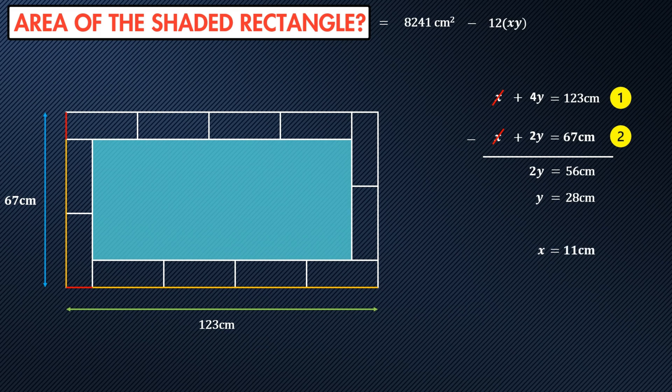So now we have values for x and for y. We can plug that into our equation. The area of the outer border is 12 times x times y, which is 12 times 11 times 28. That equals 12 times 308, which is 3,696. And the area of the shaded rectangle then is 4,545 centimeters squared.